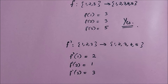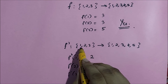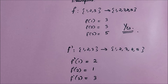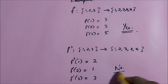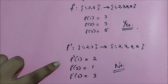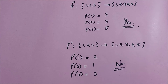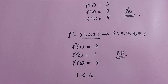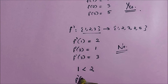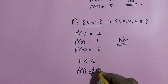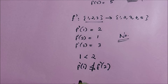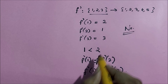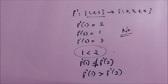Now let's look at this function f prime, which is also from the domain {1, 2, 3} to the co-domain {1, 2, 3, 4, 5}. Is this an increasing function? No, this is not an increasing function. In the domain, 1 is less than 2, but f prime of 1 is not less than or equal to f prime of 2 — in fact, f prime of 1 is greater than f prime of 2. That should not happen, which is why this is not an increasing function.